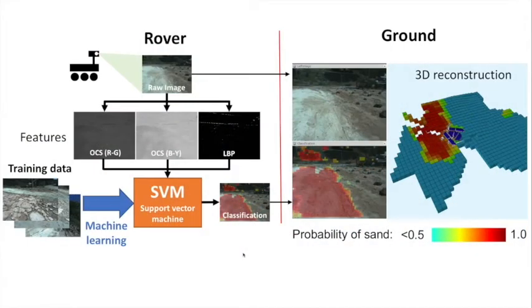Spock Light is based on linear SVM, one of the simplest machine learning algorithms. It is trained by a few hundred labeled images.